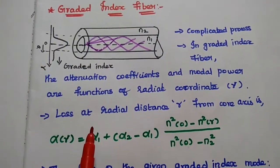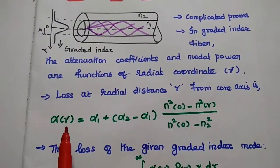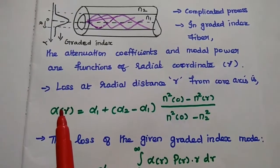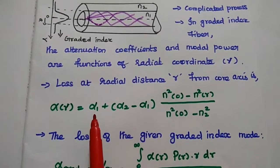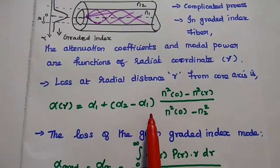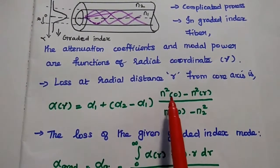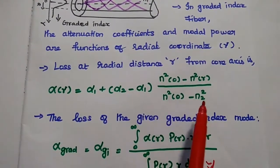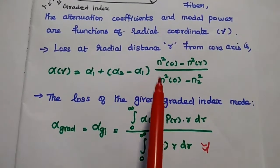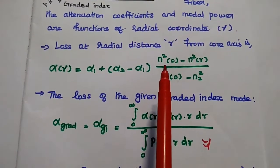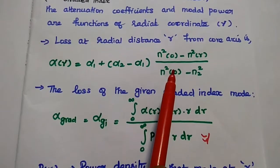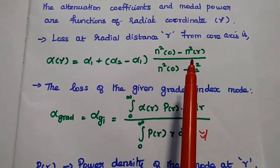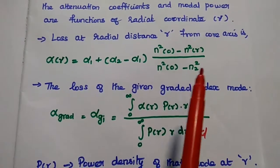The loss at radial distance r from the core axis is given as alpha(r), that is attenuation as a function of radial distance. This equals alpha1 plus (alpha2 minus alpha1) multiplied by the term [n²(0) minus n²(r)] divided by [n²(0) minus n2²]. Here n²(0) is the refractive index value at the origin of the core axis where radial distance r equals 0, and n(r) is the refractive index function at distance r.